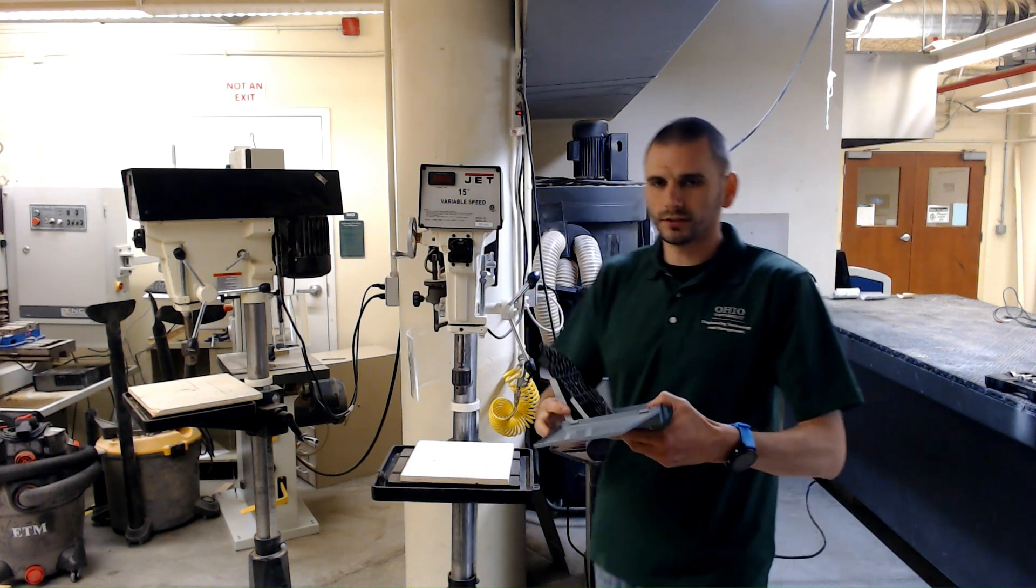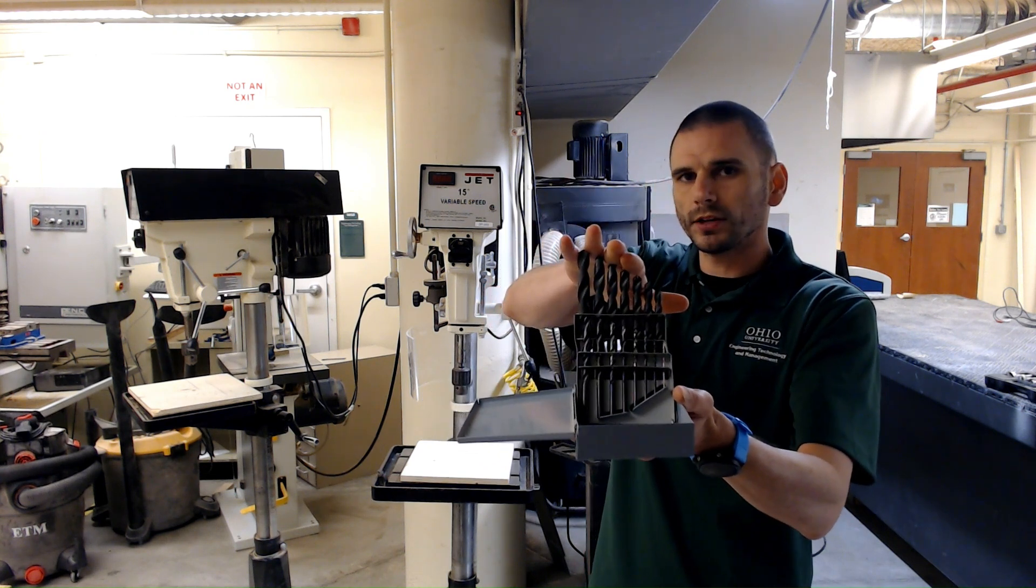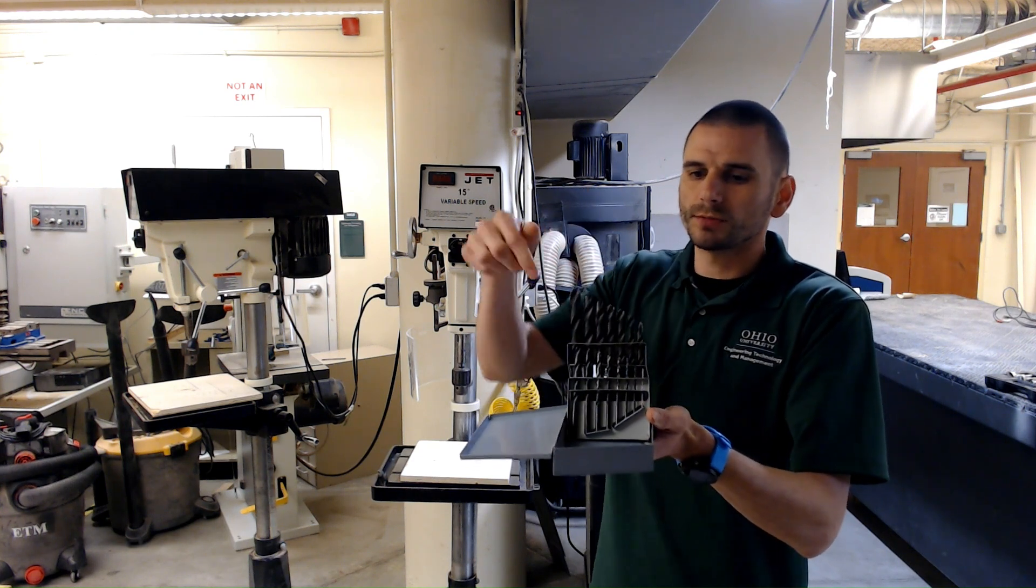With a standard twist drill, a half inch and below, you don't really have to worry about the RPMs. The ideal range for these is around one to three thousand RPMs, and the smaller the bit, the higher the RPMs.